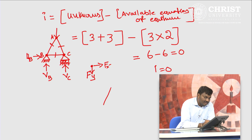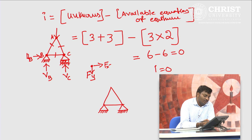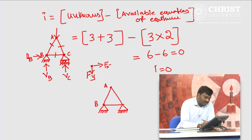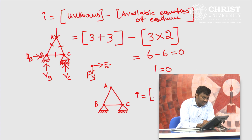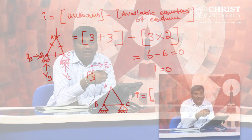If I were asked to find out the static indeterminacy of this frame with two hinge supports, let us say the support at C is also a hinge. What would be its static indeterminacy? You do not have to remember all the formulas given in various books. There are many formulas like m + j + 2r and all. You just have to know what are the unknowns in a structure and how to generate equations of equilibrium in a structure.